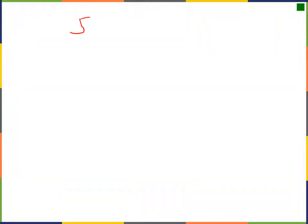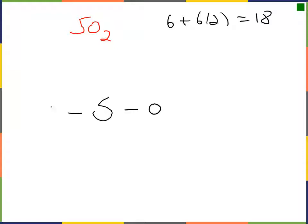Now let's consider sulfur dioxide. We count our electrons: six from sulfur and six from each oxygen, for a total of 18. We put sulfur in the middle, single bond to each oxygen, then place the remaining electrons in. We start with lone pairs on the central atom, count out, and find we have 16 electrons placed, meaning we need two more.